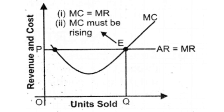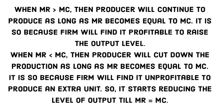When marginal revenue is more than marginal cost, the producer will continue to produce as long as marginal revenue becomes equal to marginal cost, because the firm finds it profitable to raise the output level. When marginal revenue is less than marginal cost, the producer will cut down production as long as marginal revenue becomes equal to marginal cost, because the firm finds it unprofitable to produce an extra unit, so it starts reducing output until MR equals MC.